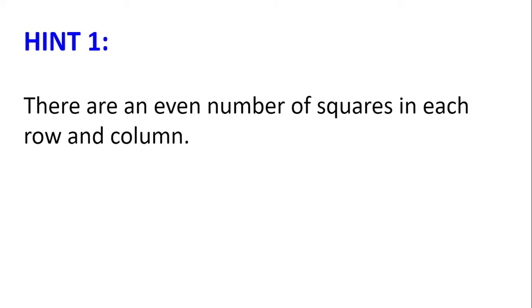Hint number one. There are an even number of squares in each row and column — six squares in each row and six squares in each column. Who does this favour and why?